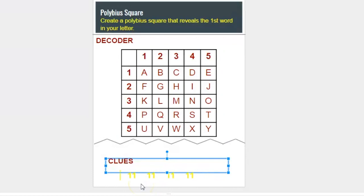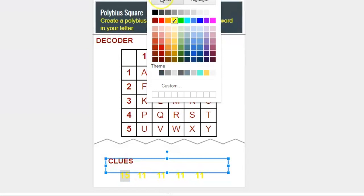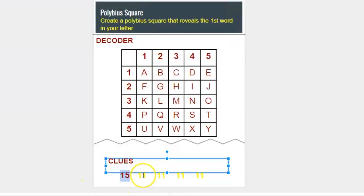So down here under my clues, I'm going to create the number 15 as the first clue to the word Exodus. Next I have the X. The X falls in five and four. So 54 is the next clue to the letter X.